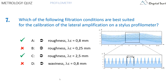The correct answers are A, lambda C equals 0.8 millimeters, and C, lambda C equals 2.5 millimeters, both with a roughness filter. Using a periodic calibration specimen with a known period makes it possible to calibrate the x-axis of a profilometer using a spacing parameter such as RSM. A roughness filter with a cutoff equal to or larger than 0.8 millimeters will ensure that the waviness is removed and the periodical pattern is not affected by the filter. With a shorter cutoff, the periodic features will start to be affected by the filter and the period may be altered. A waviness filter will only retain the large modulation and will remove almost totally the periodical pattern of interest, so the calibration cannot be done.